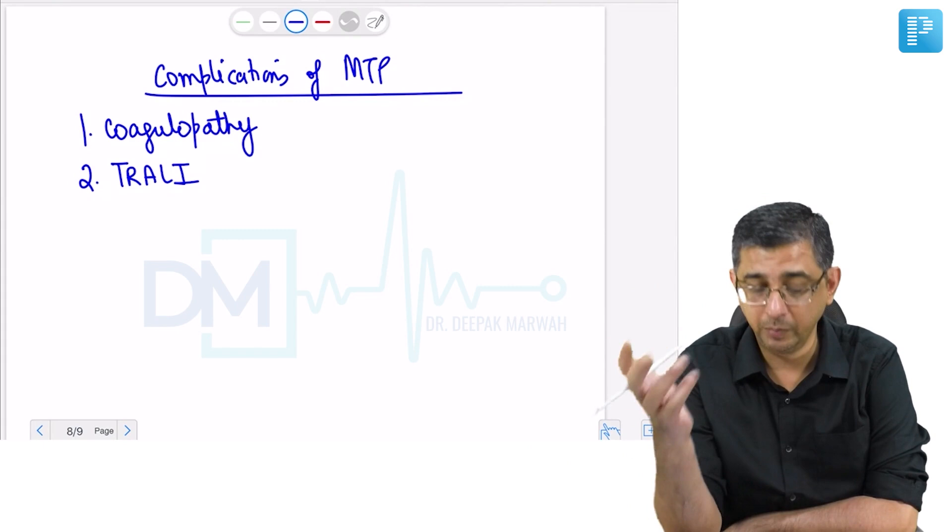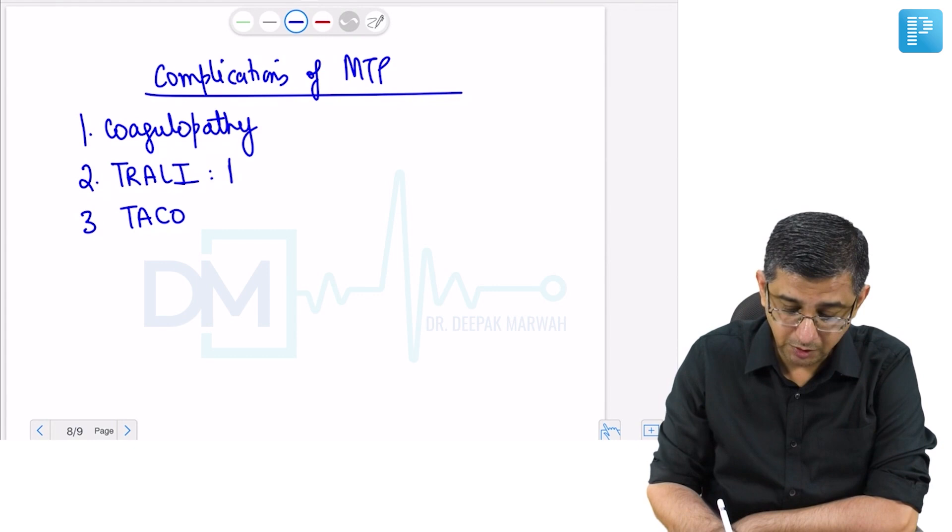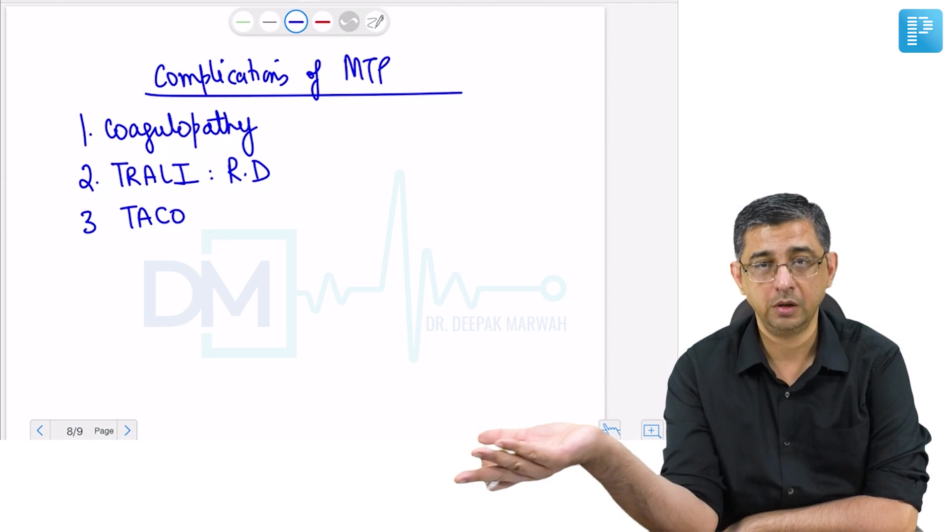He did not die of bleeding. He died of non-cardiogenic pulmonary edema, or another reason could be volume overload, like if he was a heart disease patient and you did a volume overload—that is TACO. If a person after MTP is having respiratory distress, don't answer coagulopathy. Coagulopathy contributes to bleeding and shock.